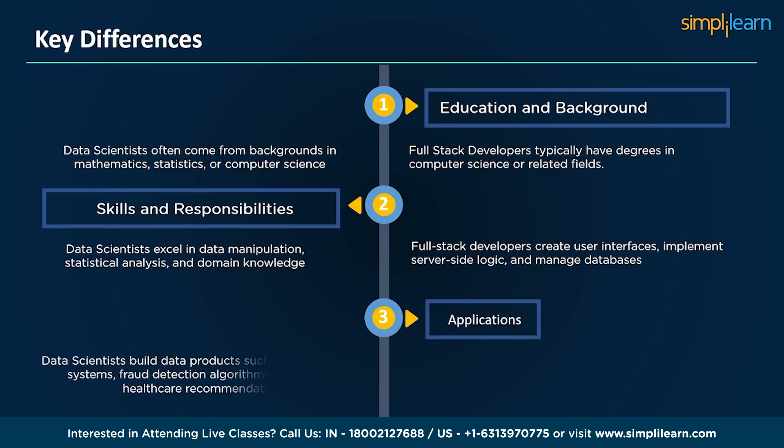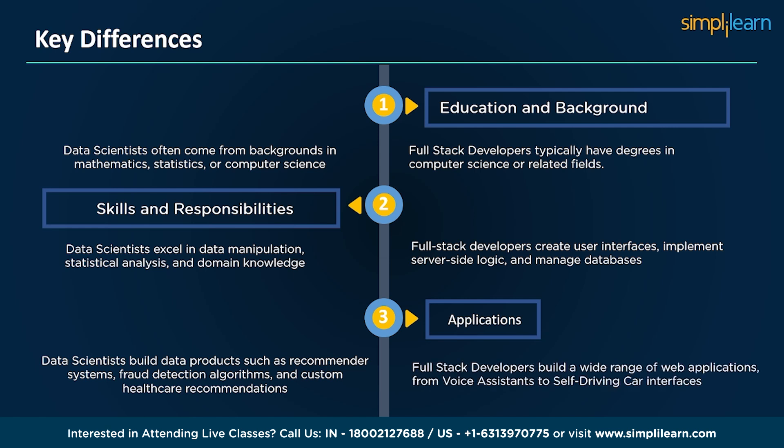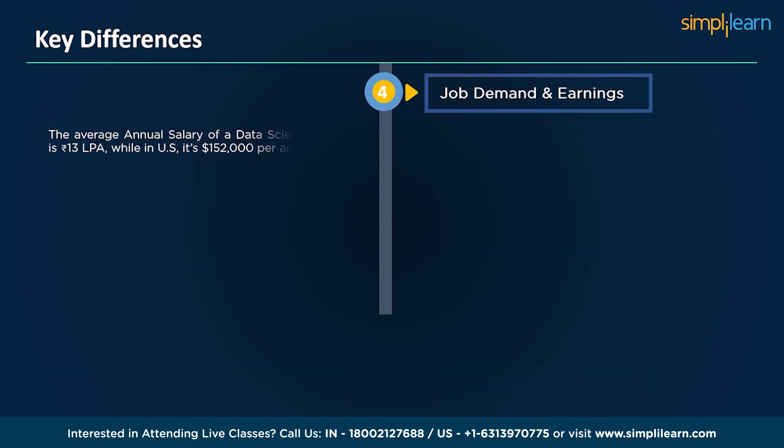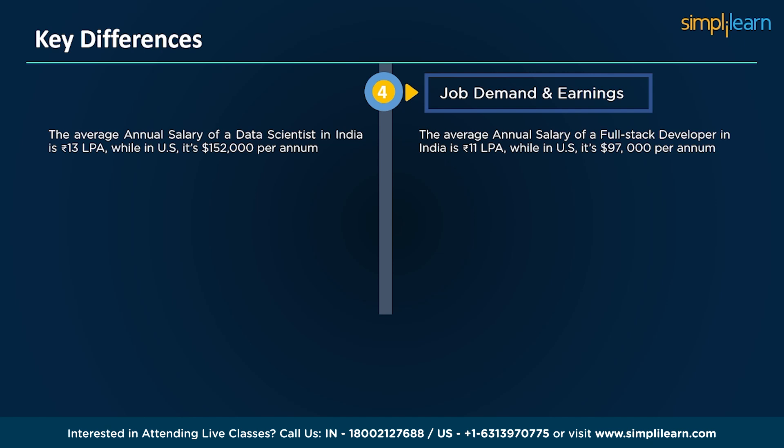Applications: while data scientists build data products such as recommender systems, fraud detection algorithms, and custom healthcare recommendations, full stack developers build a wide range of web applications from voice assistants to self-driving car interfaces. Job demand and earnings: data scientists are in high demand given their ability to extract valuable insights from data. In India, a data scientist salary ranges around 13 lakh rupees per annum, while in the United States they earn around $152,000. Full stack developers are also in demand; in India the average salary is around 11 lakh rupees per annum, and in the United States they earn around $97,000 per annum.